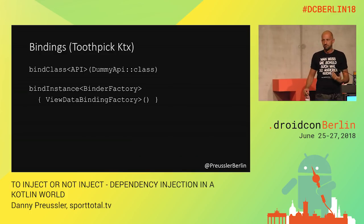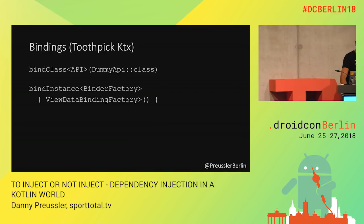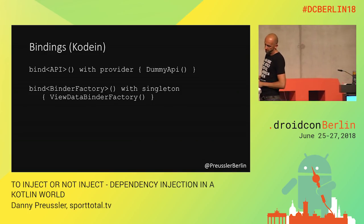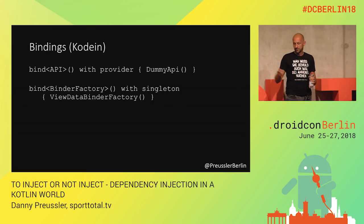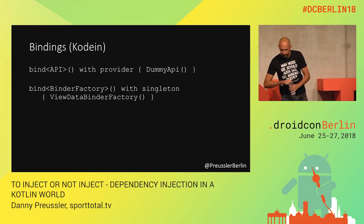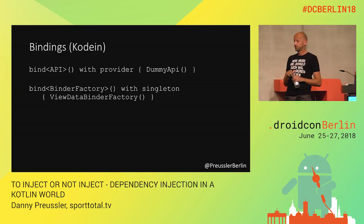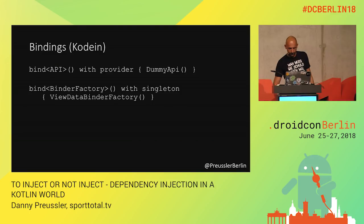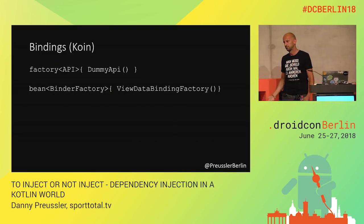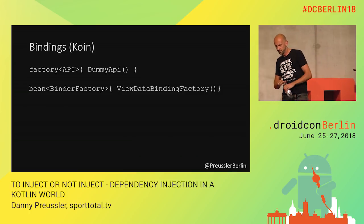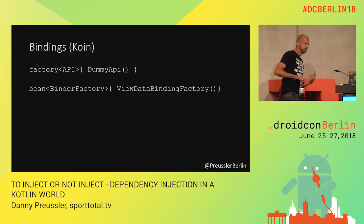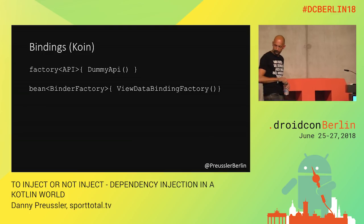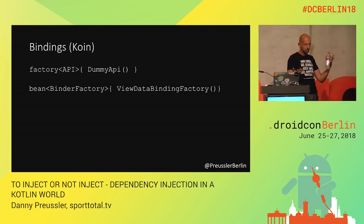How would this look in pure Kotlin frameworks? In Codein, very similar — bind with a generic and a provider, parse a lambda, and there's a nice 'singleton' keyword making it obvious. Notice we are not passing a class type there — we're passing instances, one with a lambda. In Koin, basically the same: there's 'factory' and 'bean' — bean is a singleton. They're actually changing the names because people always mix them up. In Koin 1.0, for example, bean becomes 'single.' Very similar, and it looks basically like the Kotlin extension we had.